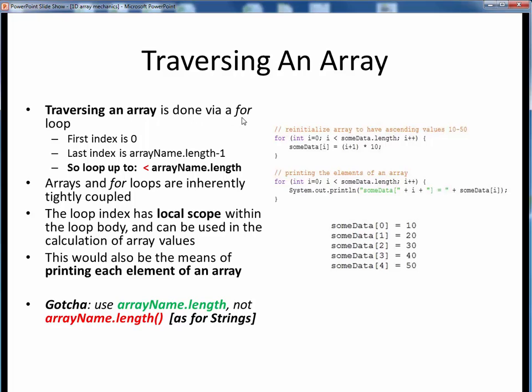Traversing an array simply means doing something with or to every element of the array using a for loop. So as we see in this top simple example, the first array index is always zero. The last array index is array name dot length minus one. So we perform looping up to, but not including, the array name dot length element, which is represented by this less than relational operator.